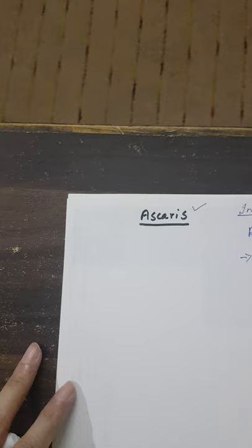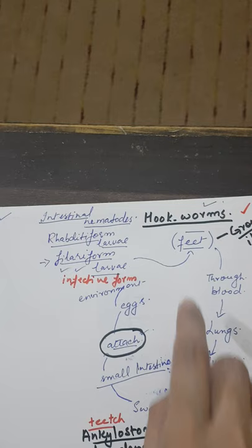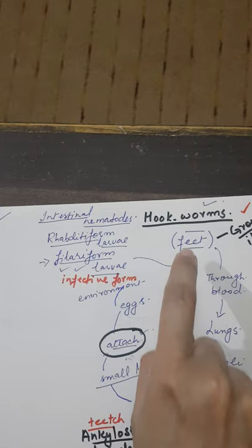Now for Ascaris. Unlike hookworms which enter from the legs, Ascaris lumbricoides also has rhabditiform and filariform larvae stages, but Ascaris is transmitted through contaminated food or water — specifically through the eggs of Ascaris in contaminated food and water.